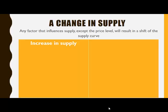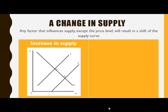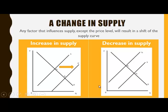An increase in supply can therefore be caused by several factors, and it is illustrated by a rightward shift of the supply curve. While a decrease in supply is illustrated by a leftward shift of the supply curve.